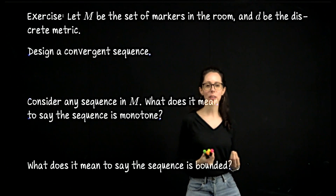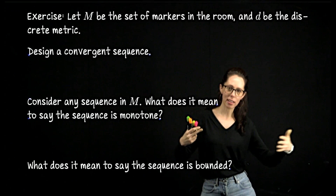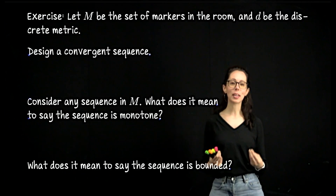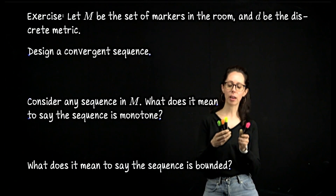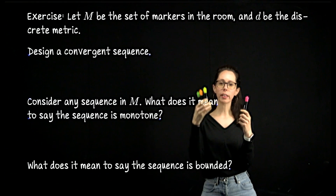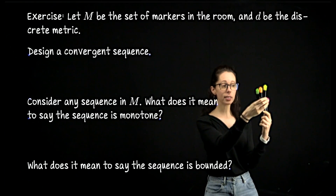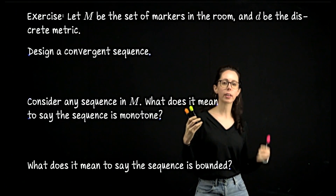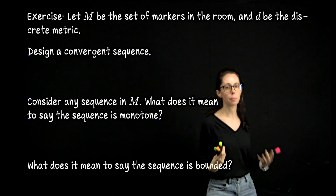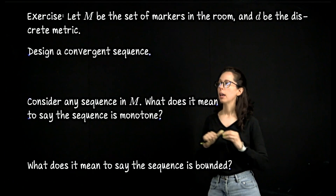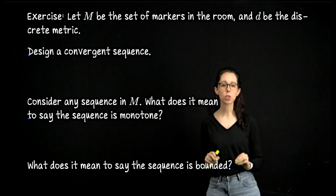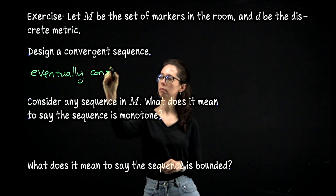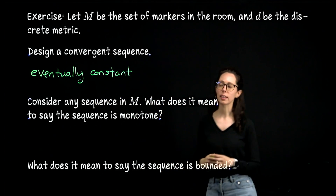If you want to claim a sequence converges to a limit, you want to imagine that in the infinite tail, the terms are really close to the limit. The only way to be close in a discrete metric space is to be the limit itself. So if the limit is the pink marker and you still see green, orange, or yellow, the distance is one — meaning beyond some threshold, you shouldn't see those other markers anymore. Any sequence which converges in a discrete metric space must be eventually constant, and the limit is whatever term is being repeated.